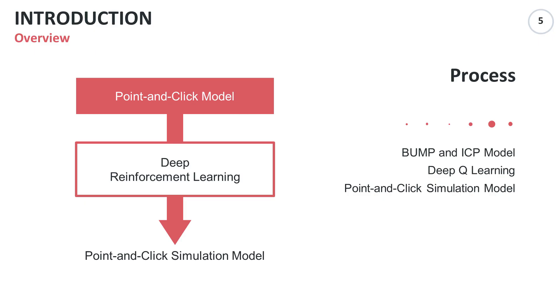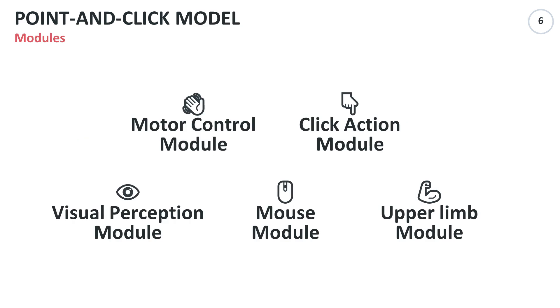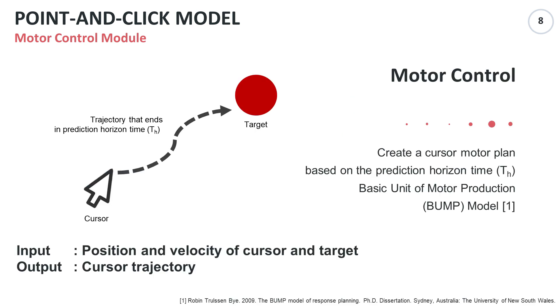First, I will explain the point-and-click model. The model consists of five modules. Let's talk about the motor control module. The motor control module creates a cursor motor plan that can move the cursor to the target based on the prediction horizon time. The cursor motor plan is calculated as minimizing the mean squared acceleration of cursor movement.